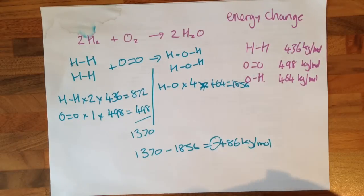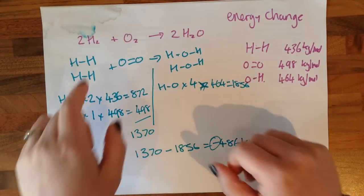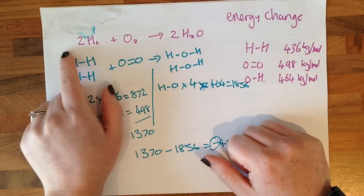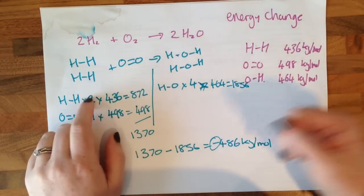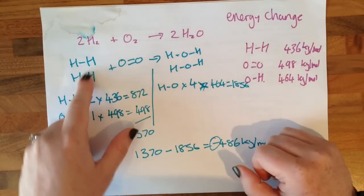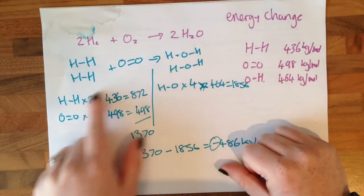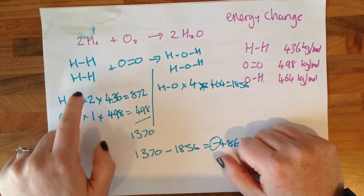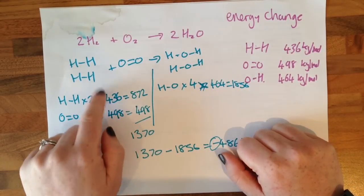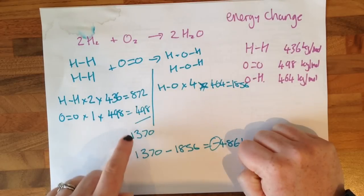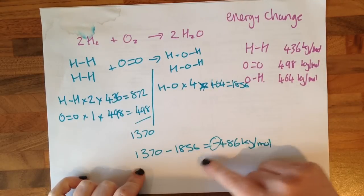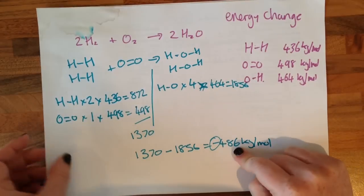Now for the maths — there are quite a lot of maths bits that go on here. This is a really tricky question if they ask it. What I want you to do is look at the equation; they like asking about this equation and they've asked it twice. Draw everything out so you can see the bonds, list the bonds, list how many of each bond there are, list the energy for each bond, do the maths, take one away from the other and work out the difference.